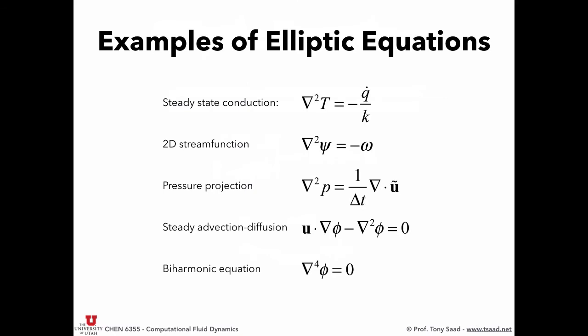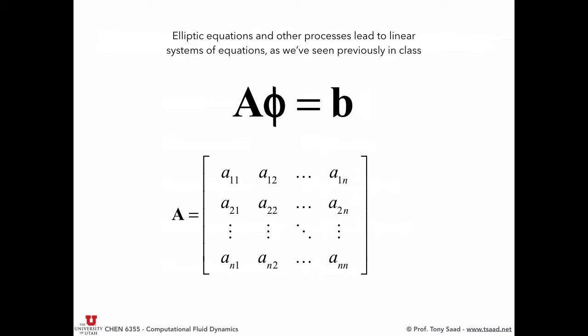In general, elliptic equations are given with either Dirichlet or Neumann boundary conditions. There are many examples of elliptic equations that you're familiar with. Steady state conduction, the 2D vorticity stream function formulation, pressure projection method, steady advection diffusion. You have the balance between diffusion and advection, a biharmonic equation, so this is still a form of an elliptic equation. Needless to say that elliptic equations and other processes will lead to systems of linear equations.